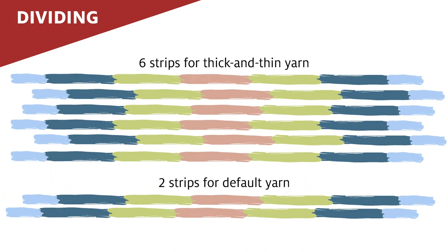I am planning on a thick and thin yarn to be used in a variable dent reed on my rigid heddle loom to weave the river ripple scarf. I will be using six of the eight sections for the thick and thin yarn and the other two sections will be spun as a default.